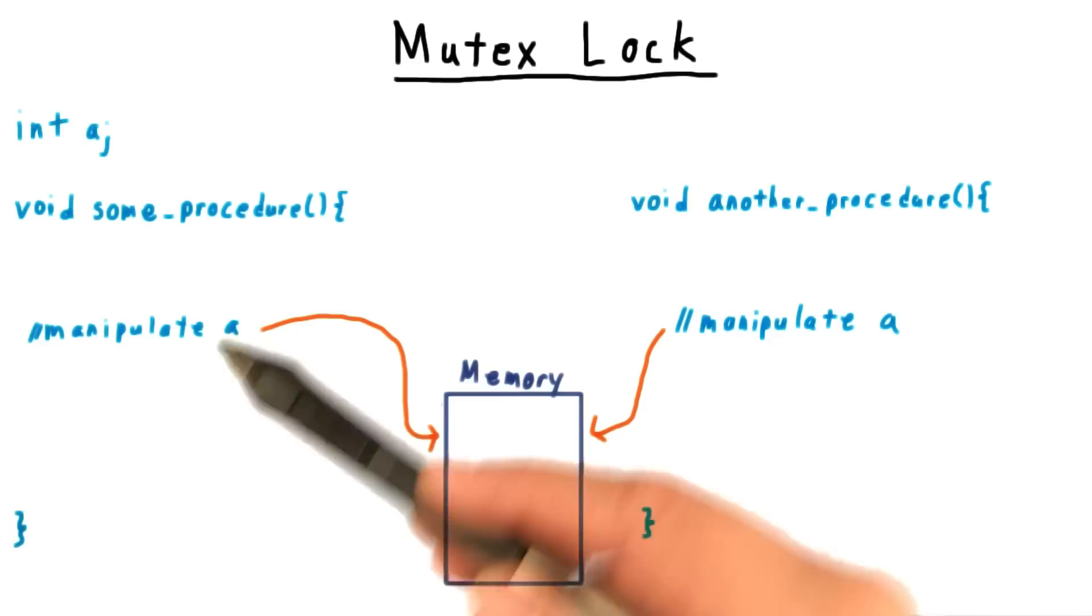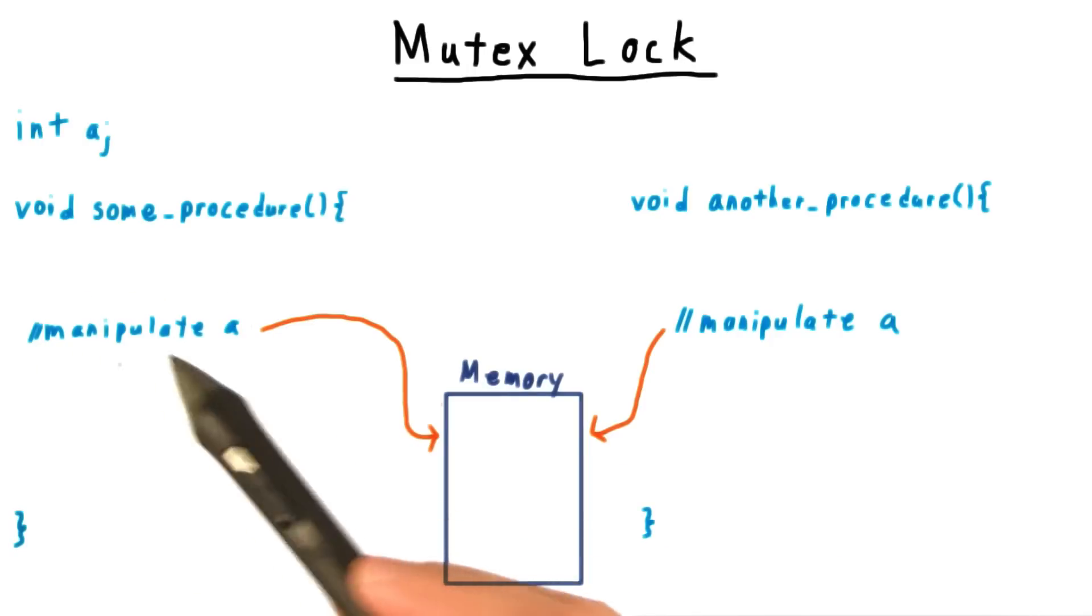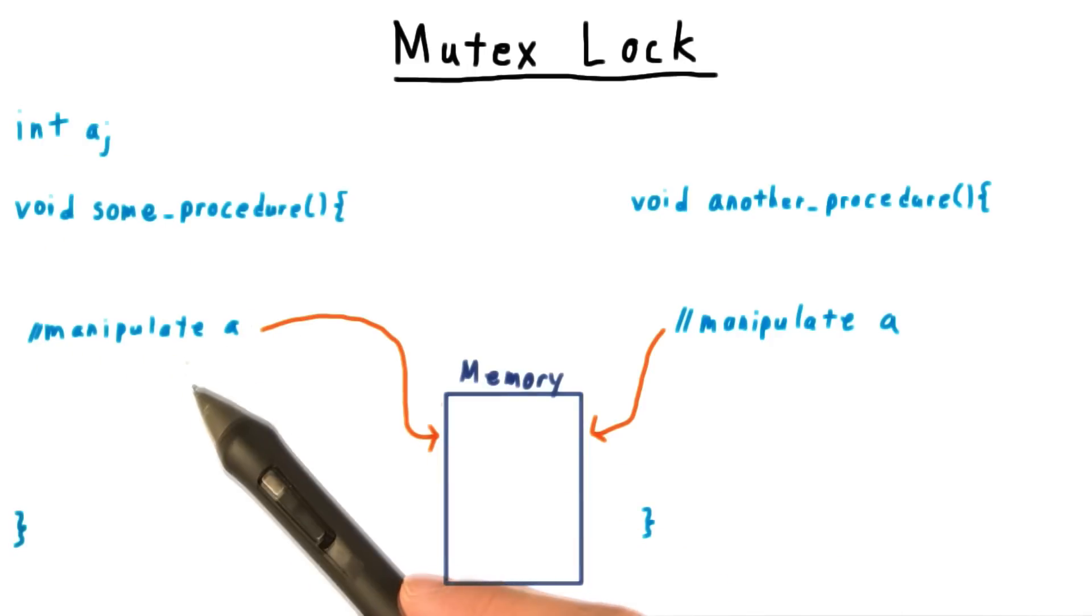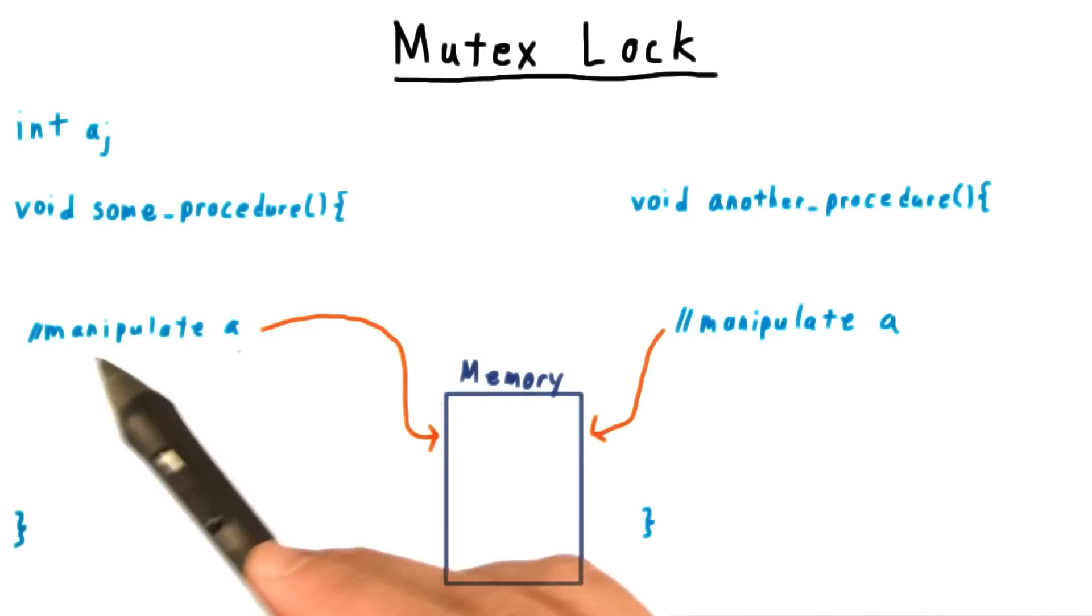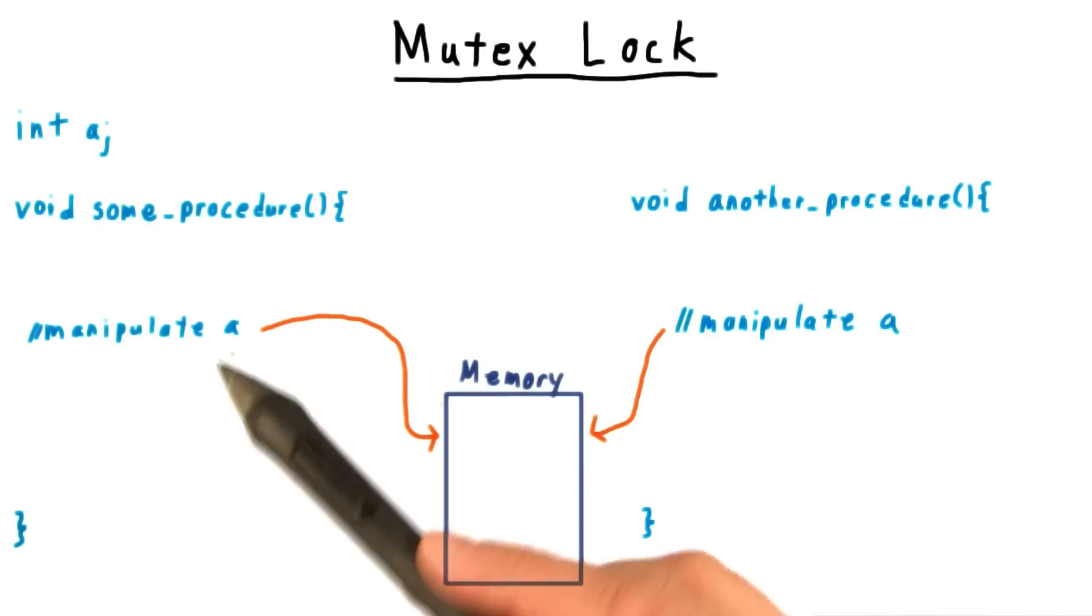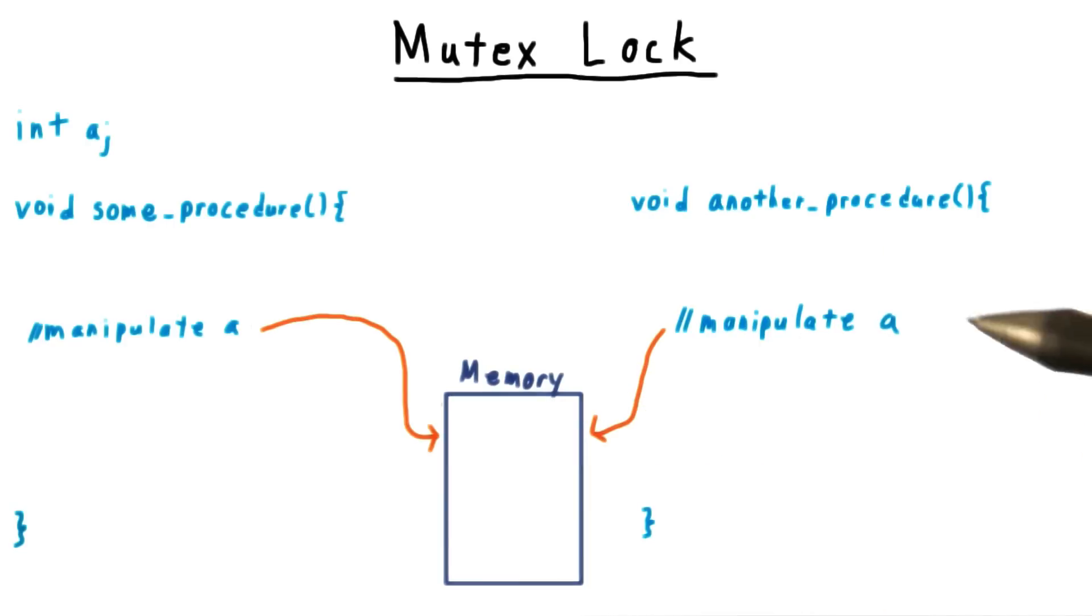Let's say that inside some procedure, there's a block where I manipulate some data, in our example, the variable A. And I need to be sure that no other thread touches this variable while I'm working on it, whether they're executing this procedure or another one.